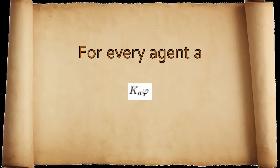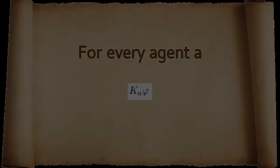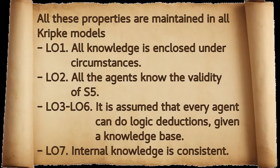The epistemic language is a rather simple extension of propositional logic. All these properties are maintained in the following Kripke models. L1: all knowledge is closed under circumstances. L2: all agents know the validity of S5. L3 to L6: it is assumed that every agent can do logical deductions with given knowledge. L7: all internal knowledge is consistent.